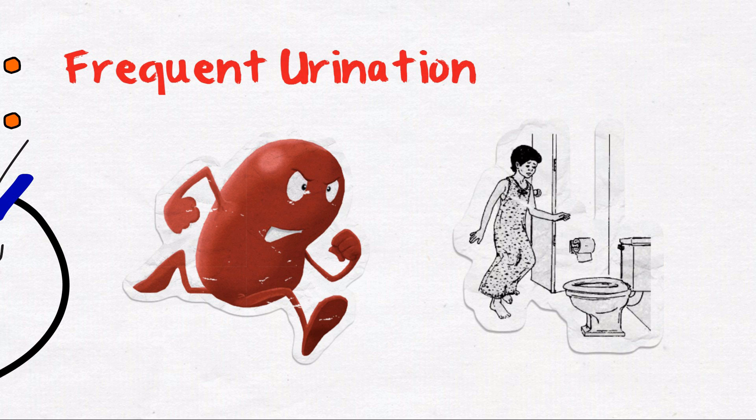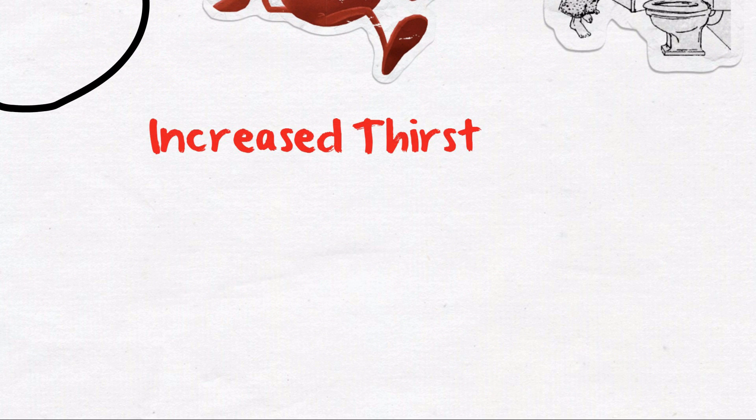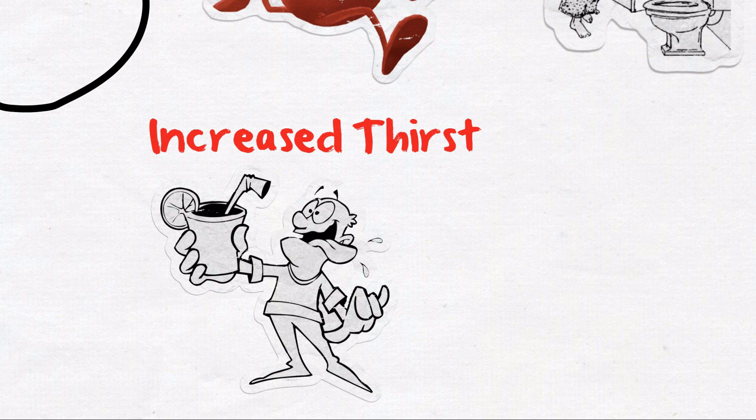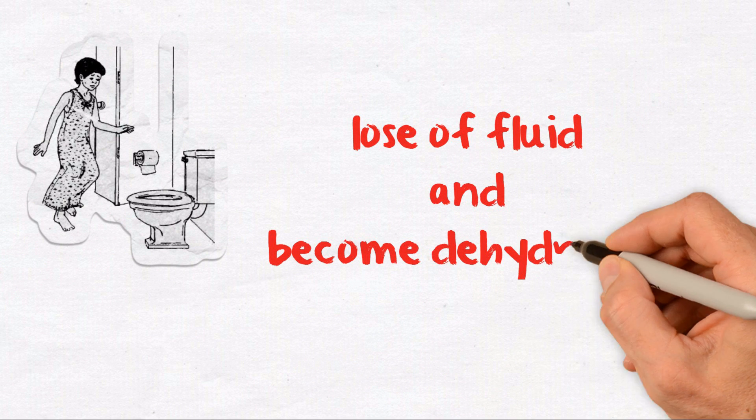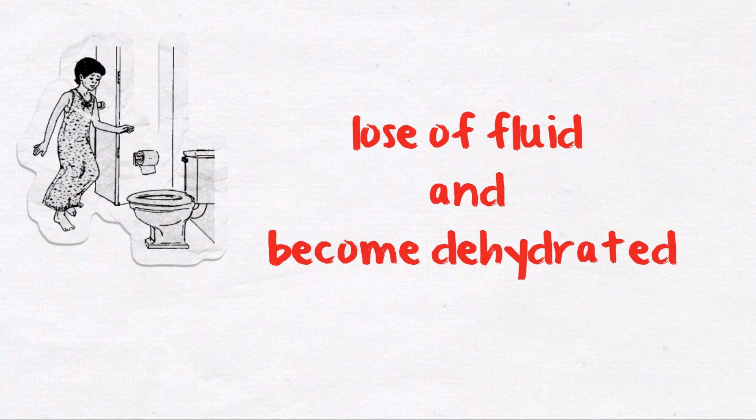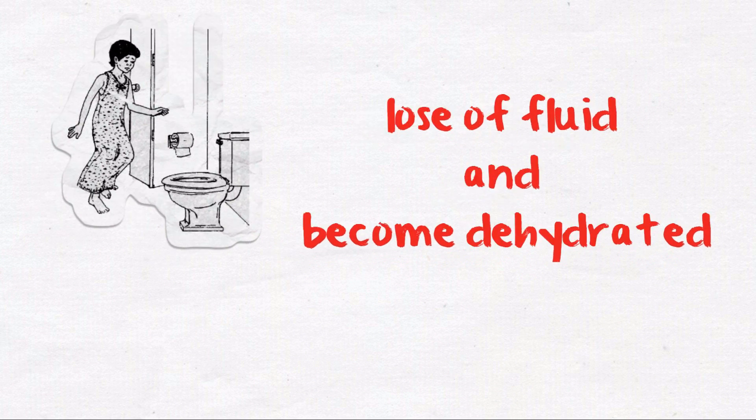Increased thirst: High blood glucose sets up a domino effect within your system. High blood sugar leads to increased production of urine and the need to urinate more often. Frequent urination causes you to lose a lot of fluid and become dehydrated.